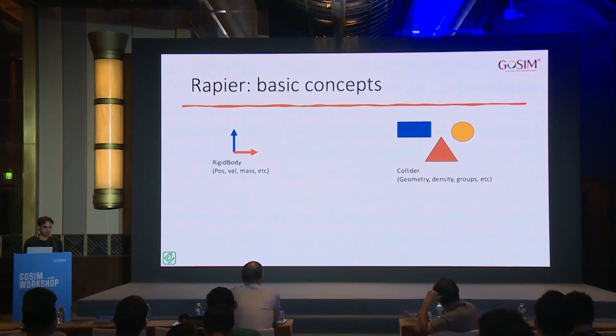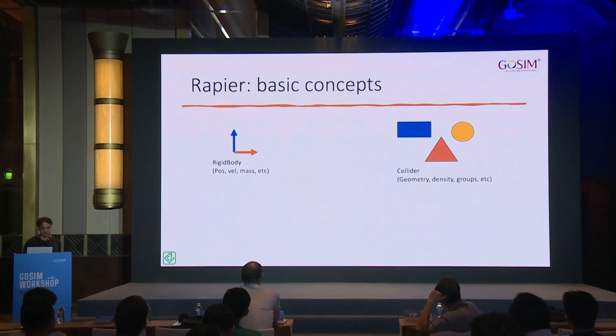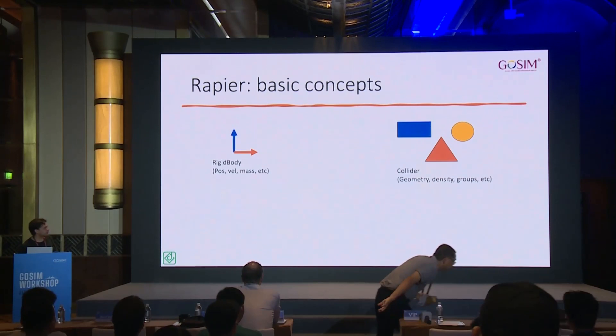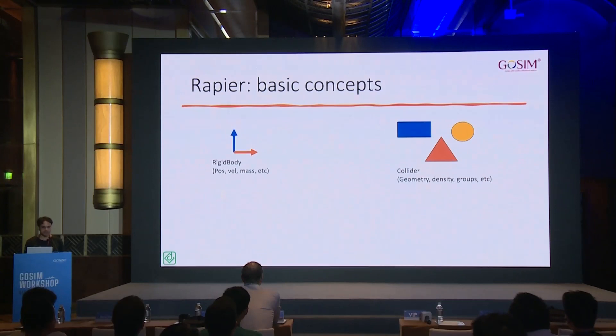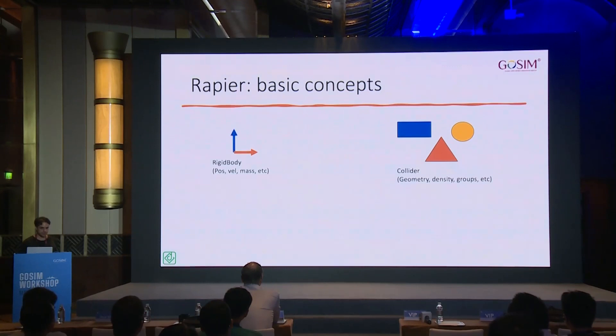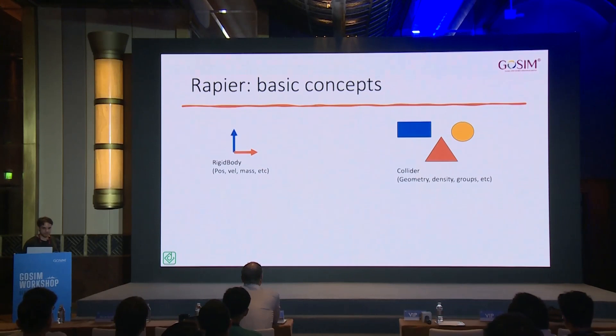The second concept is geometry, covered by colliders in Rapier — called 'fixtures' in Box2D for example. A collider combines everything you need about geometry: the geometry itself (squares, triangles, circles, triangle meshes, heightfields, etc.), density — which multiplied by surface area or volume gives the mass contribution of the collider to the rigid body — and collision groups, which let you ignore specific pairs of collisions in the scene. Colliders are attached to a rigid body if you want them to move in space.